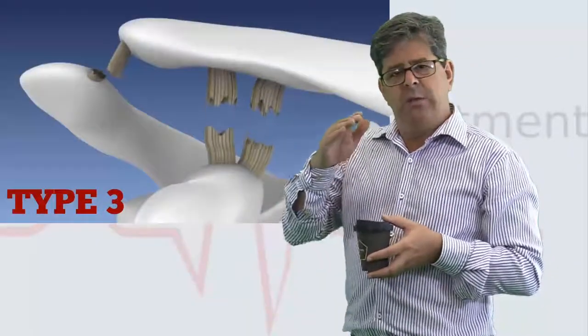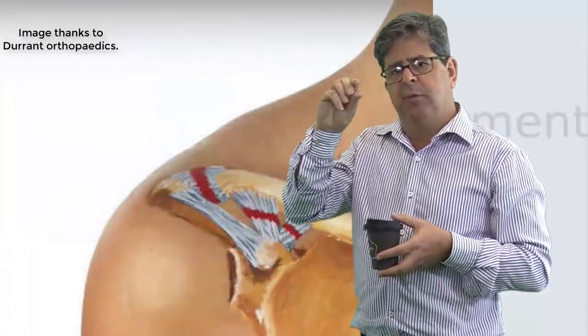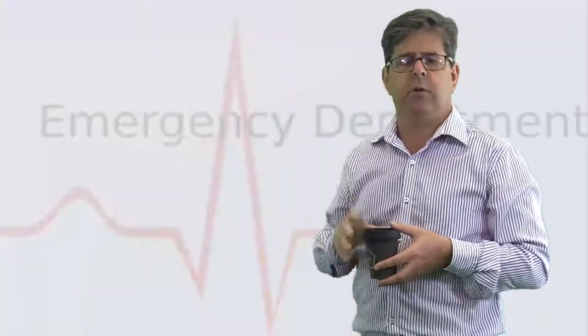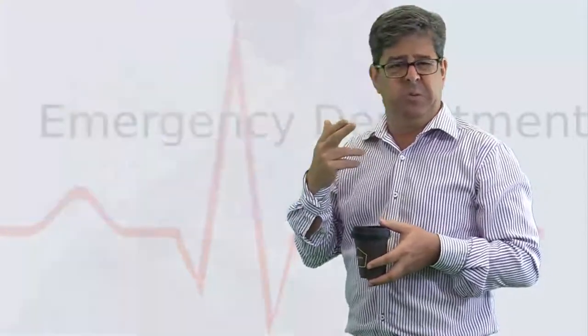Three, well now those conoid and trapezoid ligaments are getting ripped and the clavicle is lifting up like this. Four, well now the clavicle has actually gone backwards, can go into the trapezius muscle.